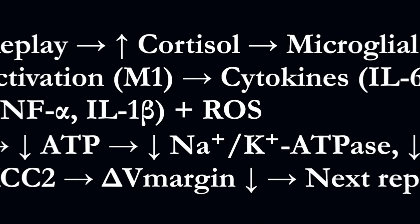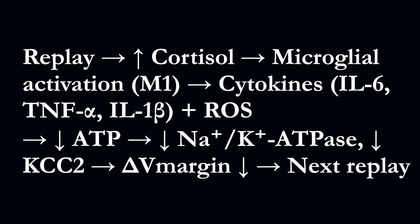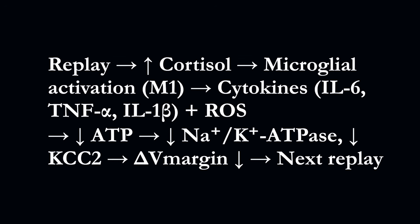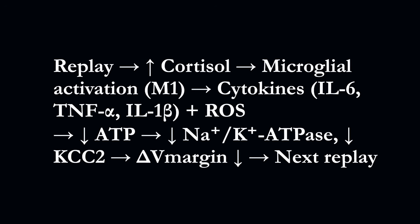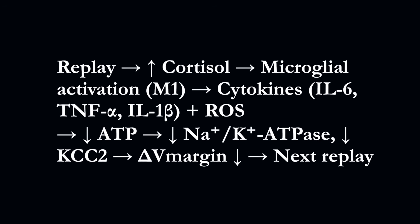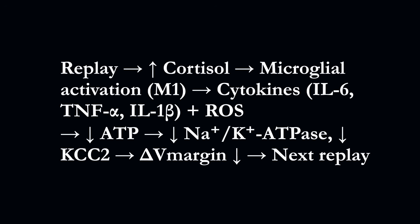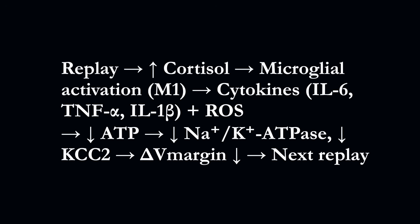Allowing the excitability margin to fall this low initiates a self-reinforcing loop. Uncontrolled emotional activation triggers a cortisol surge, which activates microglia to release cytokines and reactive oxygen species. This lowers ATP levels, weakens the sodium-potassium pump, destabilizes GIRK and TASK channels, down-regulates KCC2 and enhances NKCC1.